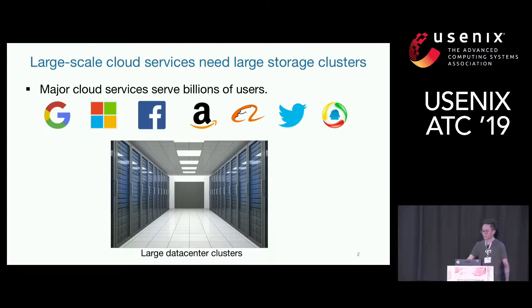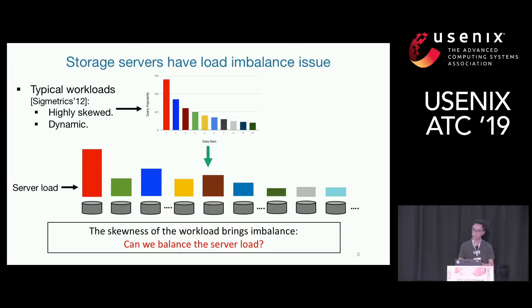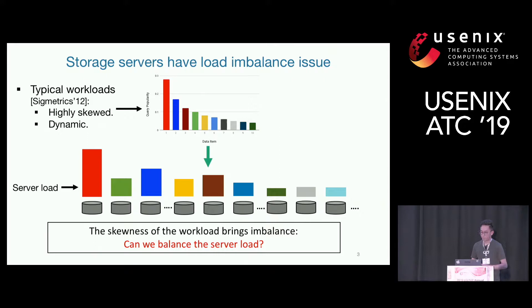However, the storage servers have a load imbalance issue. We learn from a paper from 2012 from Facebook, published at SIGMETRICS, saying that the typical workloads to their storage clusters are highly skewed and dynamic. Highly skewed means that only a few very hot items are queried many, many times. Dynamic means the hot items keep changing. This skewness brings imbalance to the backend storage servers, assuming you're using a random partition-based service like memcached, so some servers will get overloaded easily.